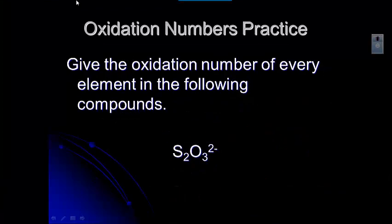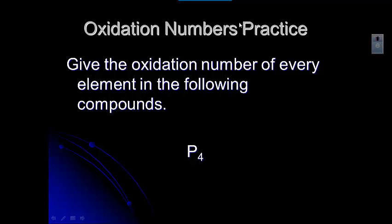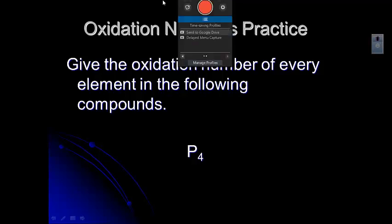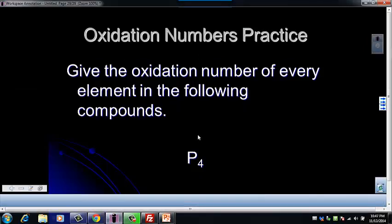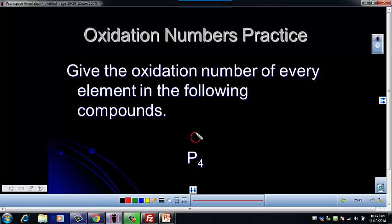Let's take a look at another one. P₄ — that's an element by itself, and for phosphorus, this is its natural state. So the oxidation number for phosphorus in this situation would be zero — it's not in a compound, it's by itself.